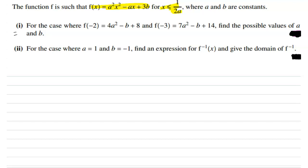The first part: given that f(-2) = 4a² - b + 8 and f(-3) = 7a² - b + 14, we need to find the possible values of a and b. The second part: when a = 1 and b = -1, we need to find the expression for f inverse of x and give the domain of f inverse of x.